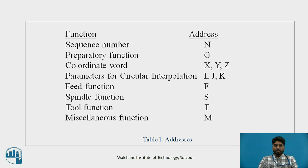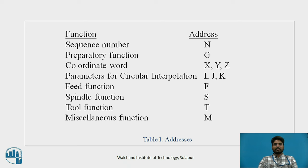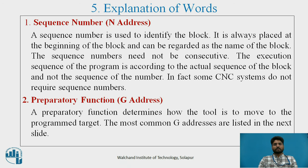These are the most common addresses — function and address: Sequence number is N. Preparatory function is G. Coordinate word is X, Y, and Z. Parameters for circular interpolation are I, J, K. Feed function is F. Spindle function is S. Tool function is T. Miscellaneous function is M.